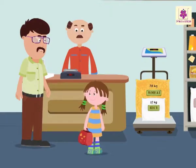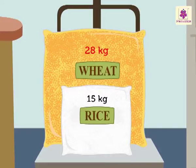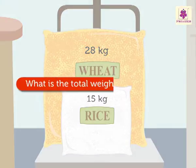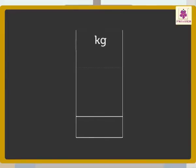Uncle Sam bought 15 kilograms of rice and 28 kilograms of wheat. Uncle Sam, how will we find the total weight of the rice and wheat? It's very simple. You will yourself find the total with the help of the rules of addition that you have learnt earlier. So, let's begin.